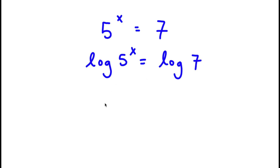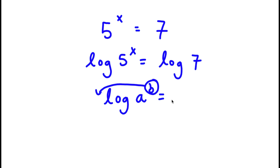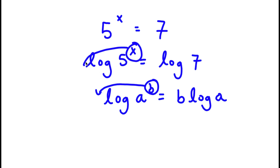Now, if I have something in the form log a to the power of b, I can simply move the exponent b to the front, so this equals b times log a. In this case, I have log 5 to the power of x, so I can move x to the front. Now I have x times log 5 is equal to log 7.